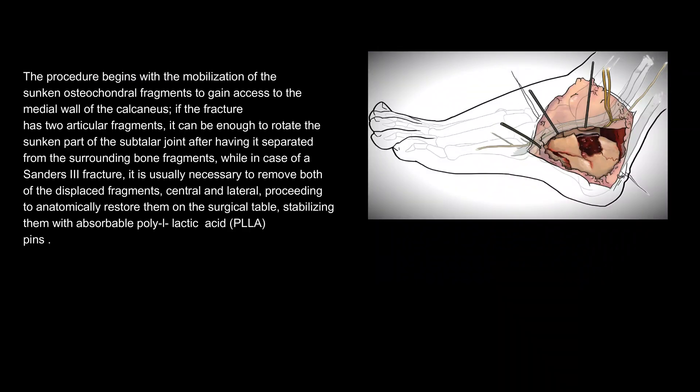The procedure begins with the mobilization of the sunken osteochondral fragments to gain access to the medial wall of the calcaneus. If the fracture has two articular fragments, it can be enough to rotate the sunken part of the subtalar joint after having it separated from the surrounding bone fragments. In case of a Sanders III fracture, it is usually necessary to remove both displaced fragments — central and lateral — proceeding to anatomically restore them on the surgical table, stabilizing them with absorbable poly-L lactic acid (PLLA) pins.